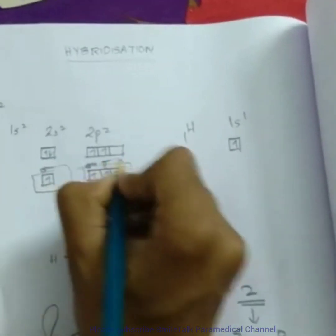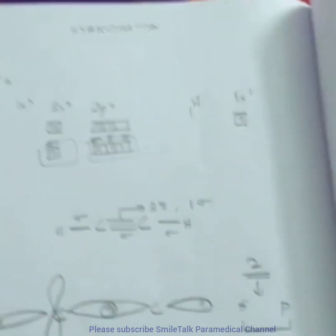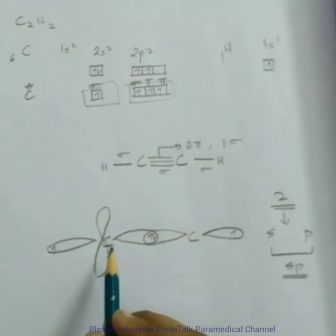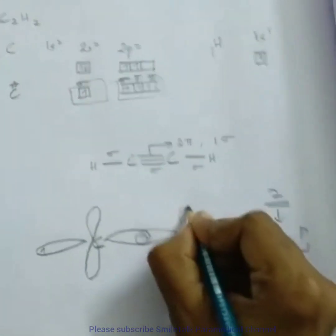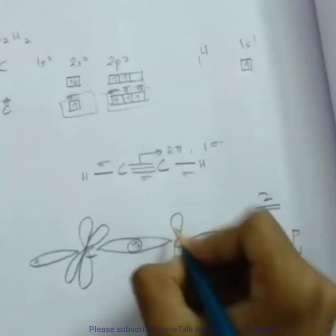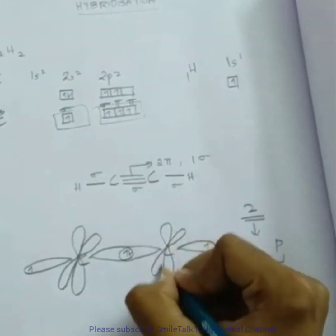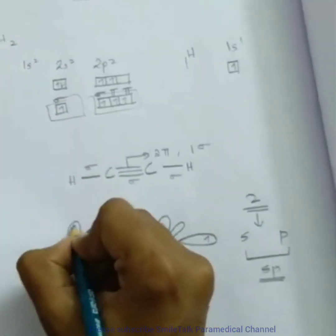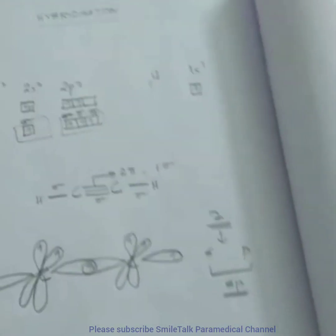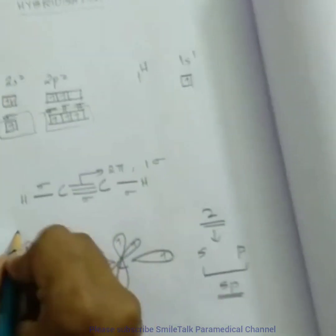So we have two pi bonds remaining and we do the pi bond hybridization by p orbital. So the first pi bond is completed and we give the second pi bond with one electron.